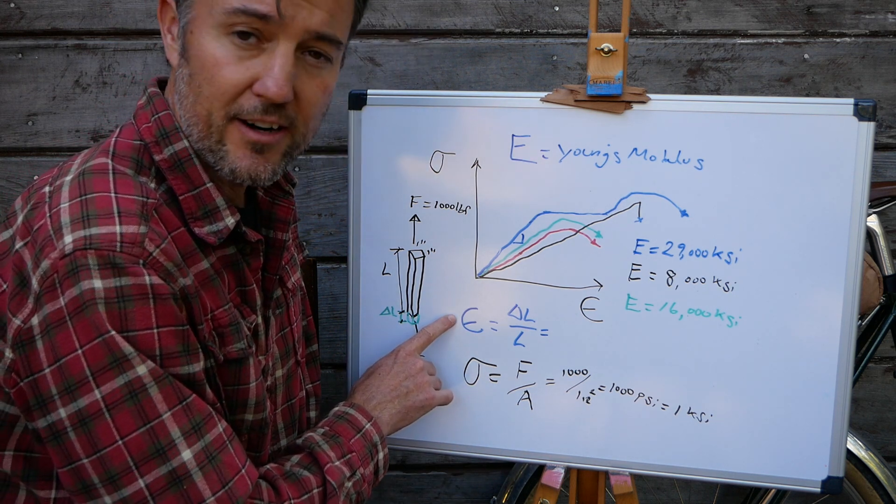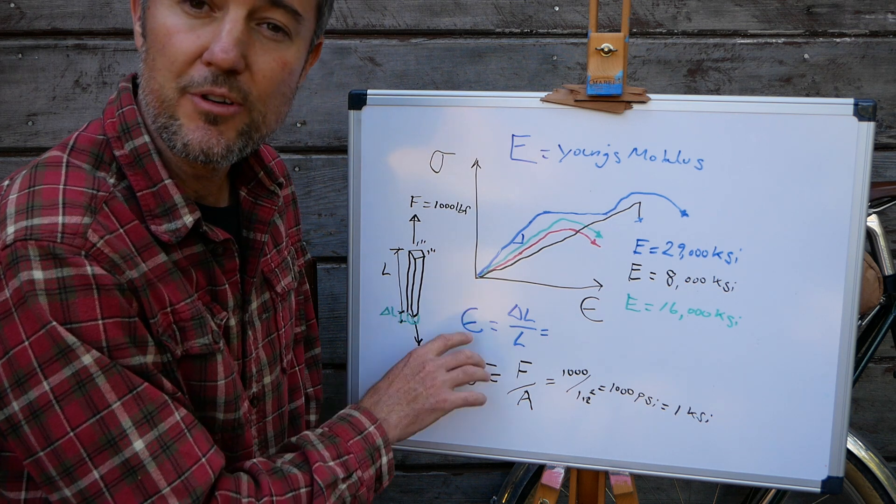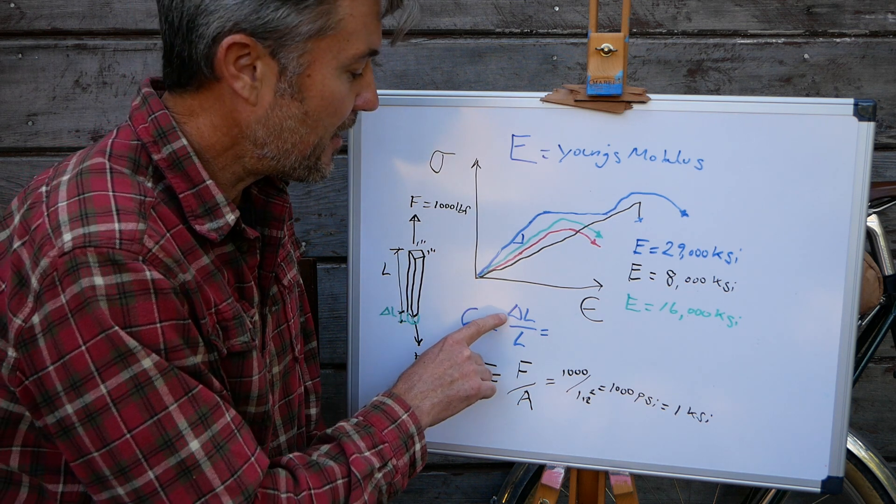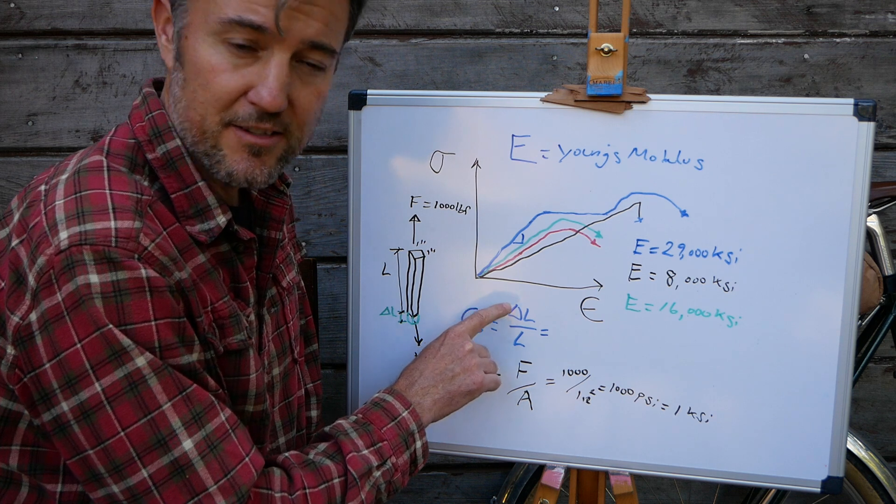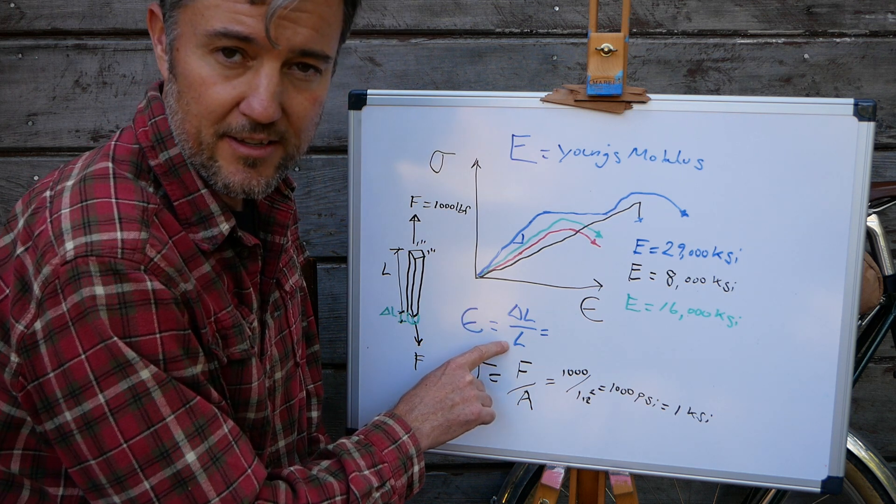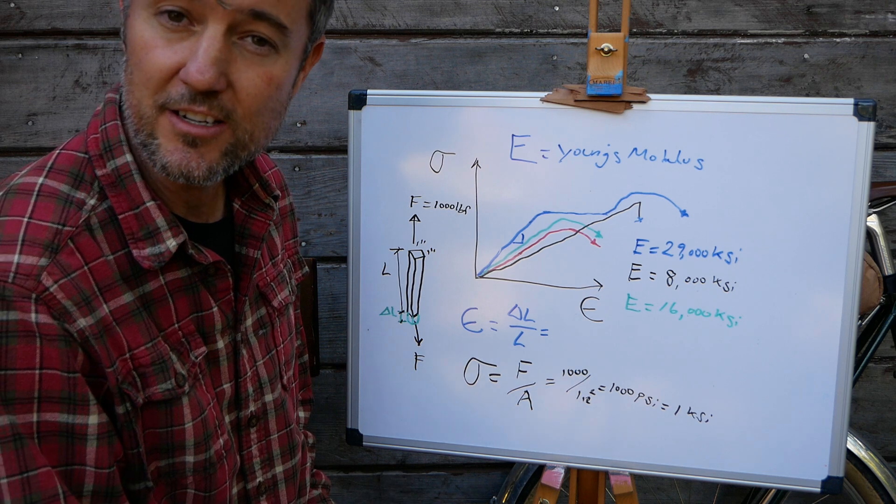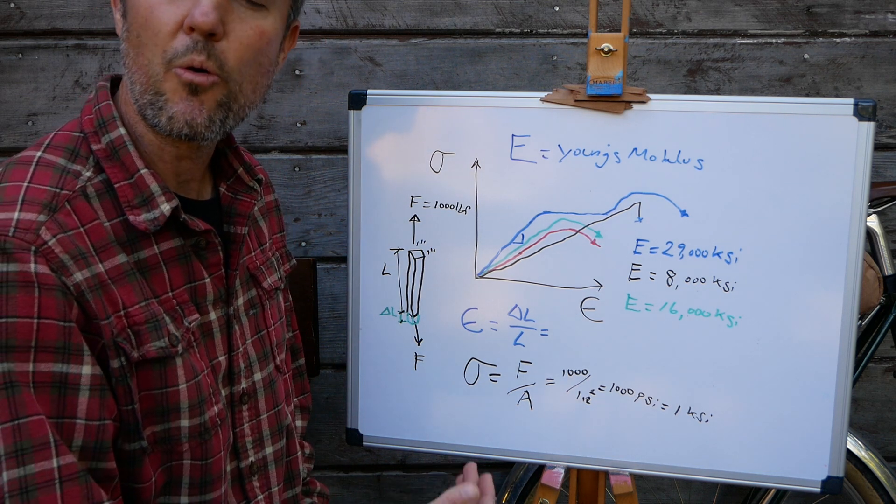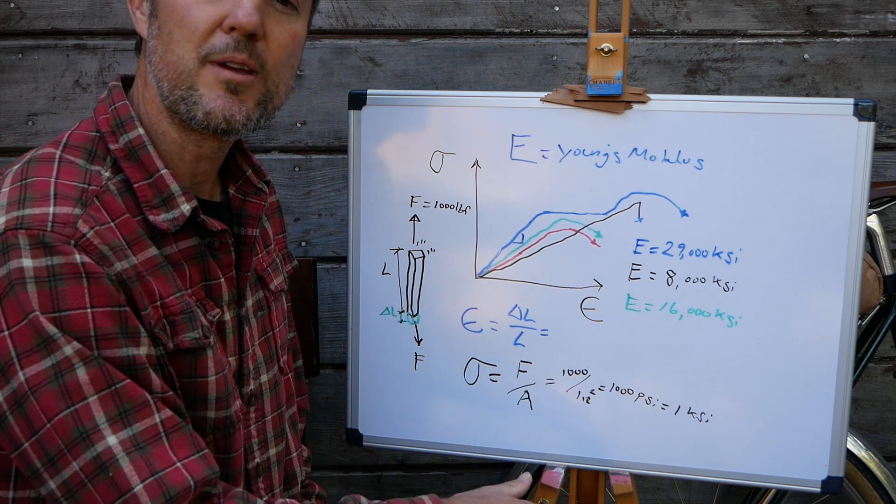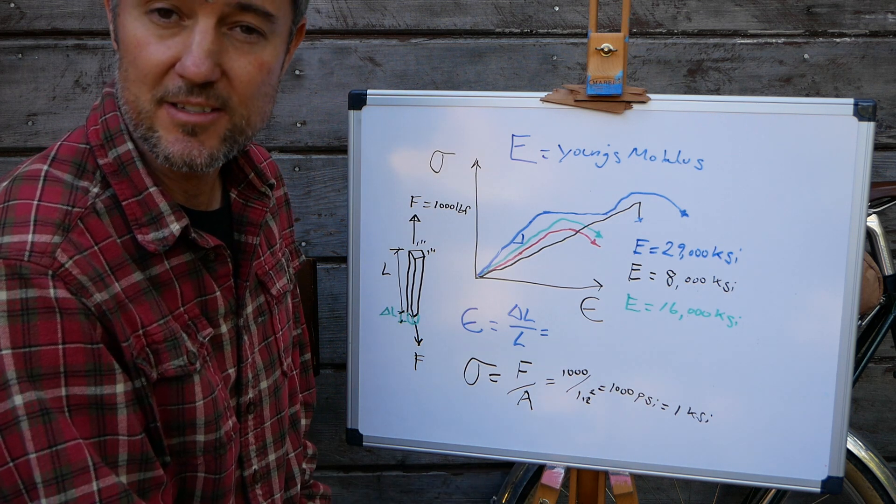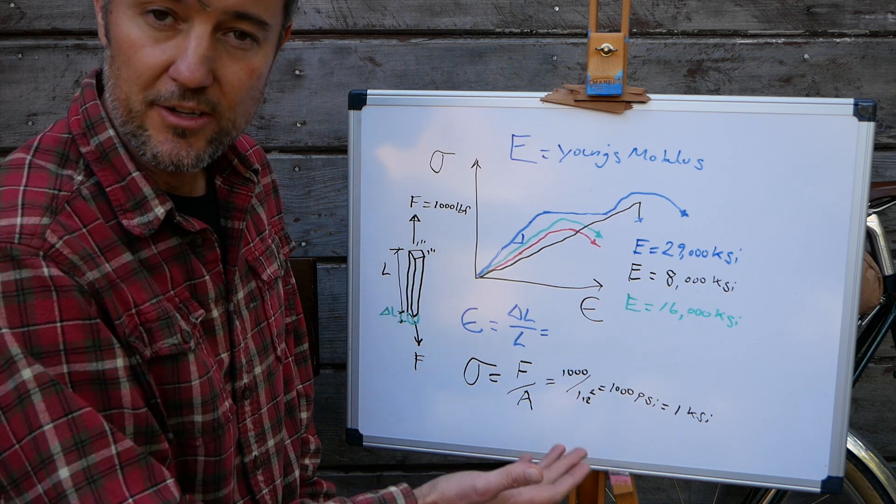Strain, on the other hand, is simply a unitless term that is defined as the change in the length divided by the initial length. So it's basically a percentage of the elongation and it's often reported as a percentage or it can be used as a decimal when you do a calculation.